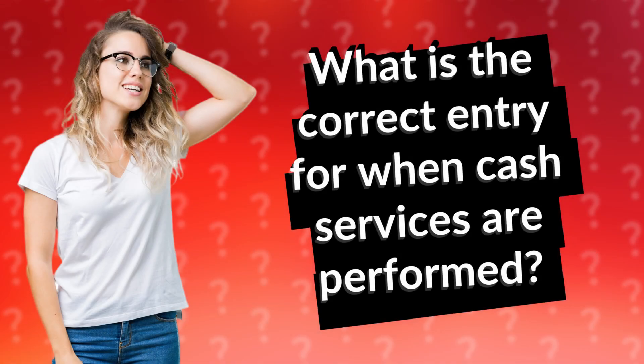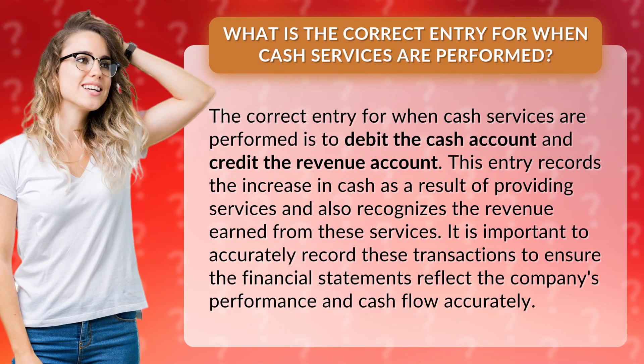What is the correct entry for when cash services are performed? The correct entry is to debit the cash account and credit the revenue account. This entry records the increase in cash as a result of providing services and also recognizes the revenue earned from these services.